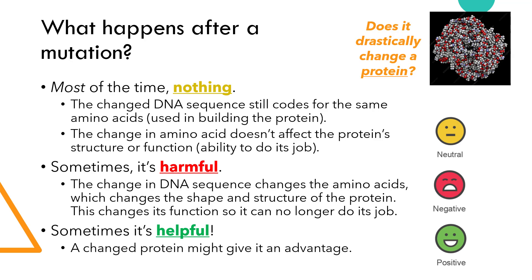Some examples of beneficial mutations: many humans are able to digest lactose, the sugar in milk, throughout their entire lives into adulthood, so they are able to have dairy products without getting sick. Humans are naturally supposed to be lactose intolerant, but at one point in time there was a mutation to change that, and it has become more common in populations where it's common to eat and drink a lot of dairy products. That mutation has been passed on to their offspring. Some mutations can also lead to an increased resistance to certain diseases, so an organism wouldn't get sick or as sick from a disease.